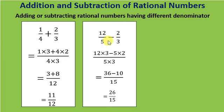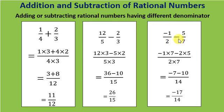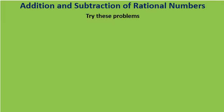One more example: 12 by 5 minus 2 by 3. The denominators are different, so using cross multiplication: 12 into 3 minus 5 into 2 divided by 5 into 3, which is 36 minus 10 divided by 15, giving 26 by 15. One more example: minus 1 by 2 minus 5 by 7. Using cross multiplication: minus 1 into 7 minus 2 into 5 divided by 2 into 7, which is minus 7 minus 10 divided by 14. Both are negative, so we add them and the result stays negative: minus 17 divided by 14.